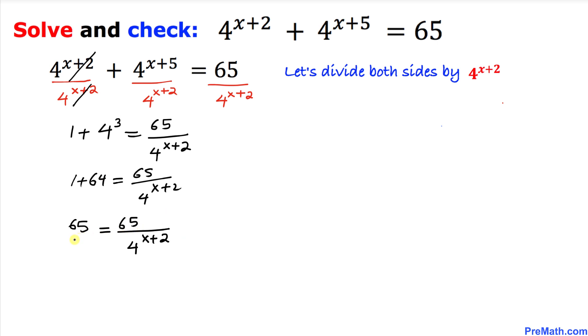Now we are going to make it a fraction 65/1, and now we are going to cross multiply. So we get 65 times 4^(x+2) = 1 times 65, which is 65.